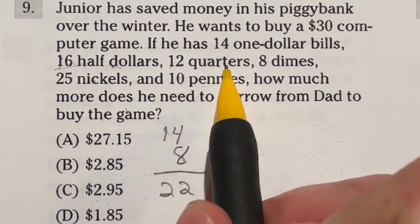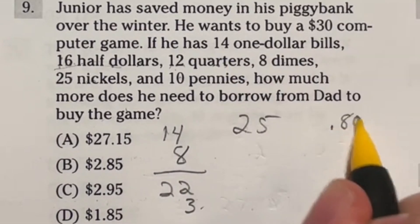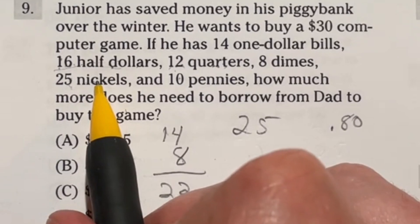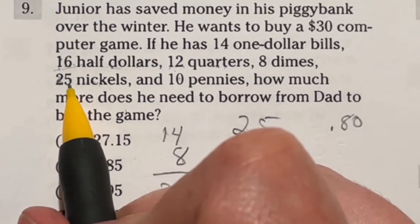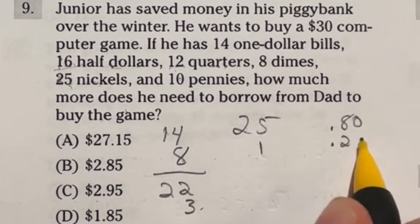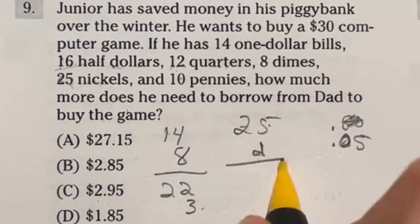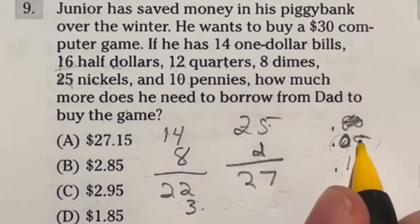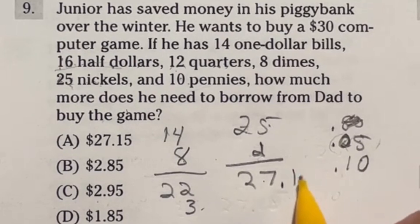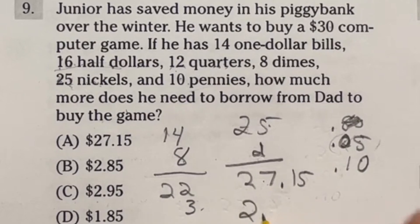Next, 12 quarters: 4 quarters make a dollar, so 12 divided by 4 is 3, bringing us to $25. Then 8 dimes is 80 cents. For 25 nickels: 20 nickels make a dollar, leaving 5 nickels at 5 cents each equaling 25 cents. The 80 cents and 25 cents combine: 80 plus 20 makes another dollar with 5 cents left. That's $27 plus 5 cents. Add the 10 pennies to get $27.15 total. So 30 minus $27.15 means he needs $2.85 more.